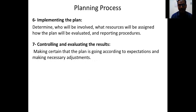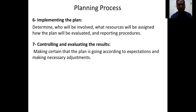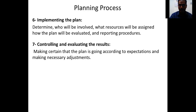The sixth step is implementing the plan. Once we finalize our plan it is time to execute it. We determine who will be involved, what resources will be assigned to each person, and how the plan will be evaluated. Management needs to know how far the plan has been properly implemented, using different evaluation methods to ensure there is no deviation from the original plan and the goal is achieved within the given deadline.